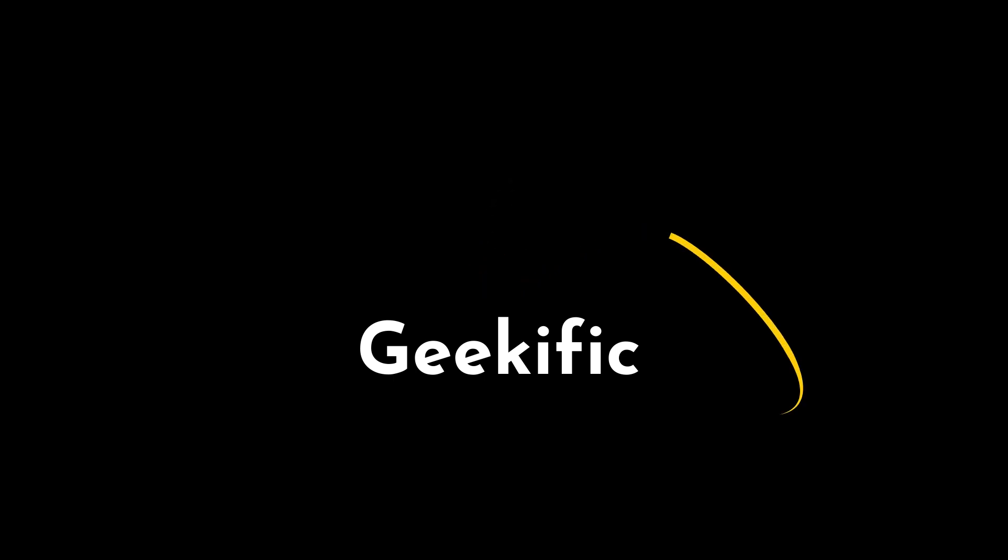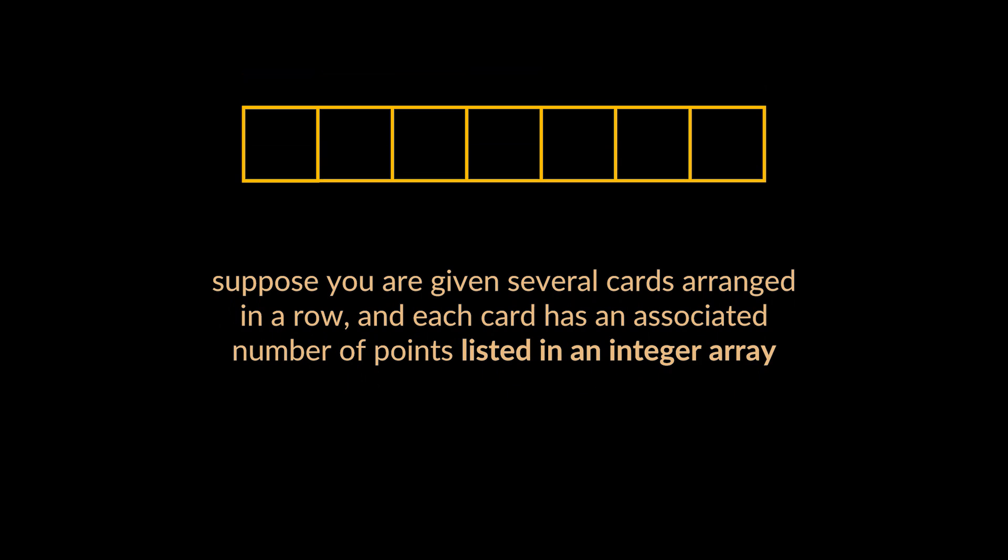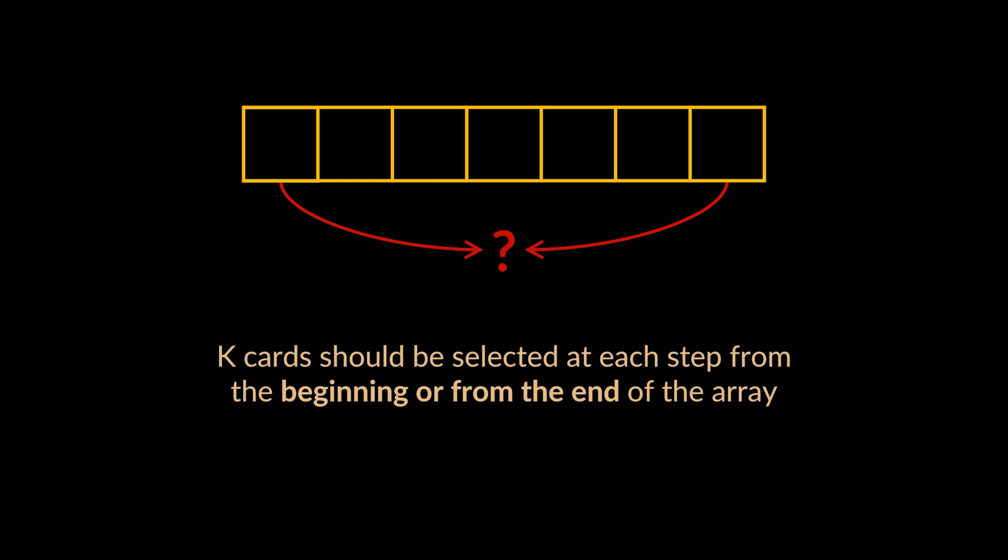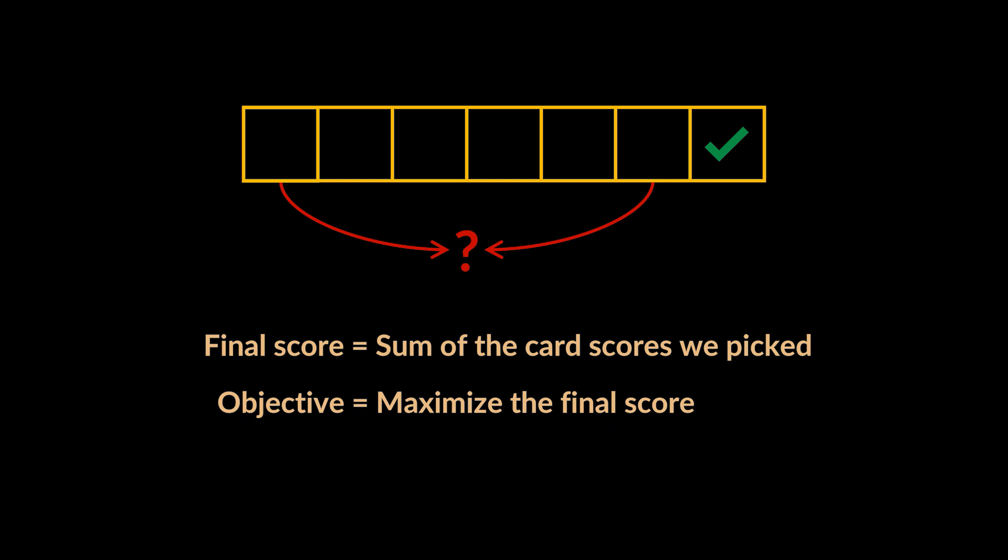What's up geeks and welcome to the channel. Suppose we are given several cards arranged in a row and each card has an associated number of points. The points are given in an integer array. At each step we can take one card from the beginning or from the end of the array. We must take exactly K cards. The value of K will be given. Our final score is the sum of the points on the cards we have taken. So given an array and the integer K, return the maximum score we can obtain.